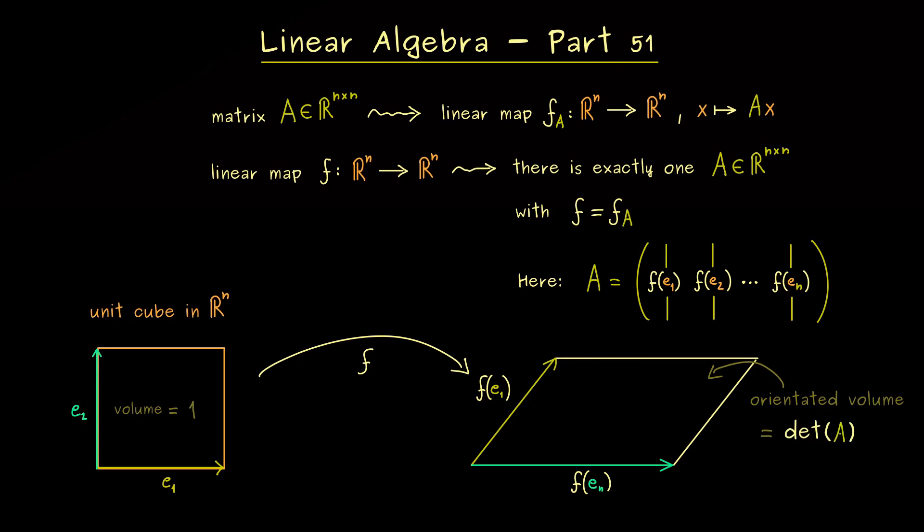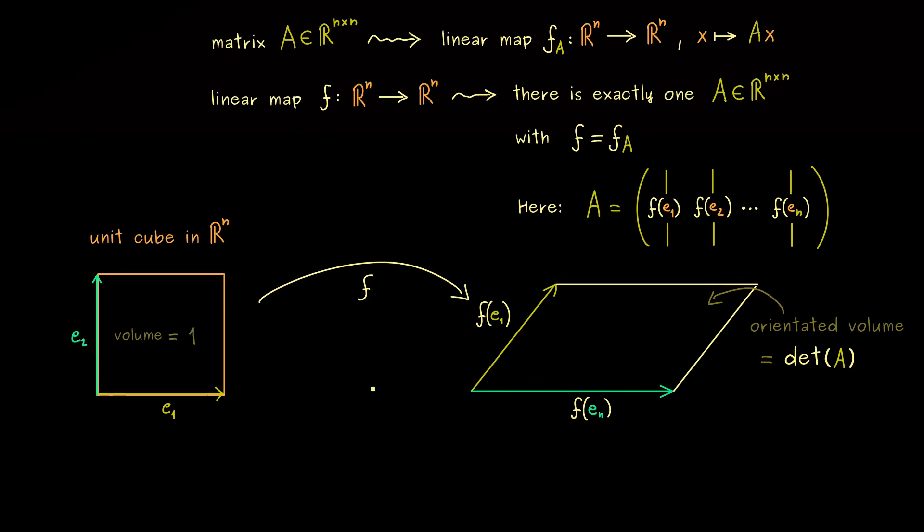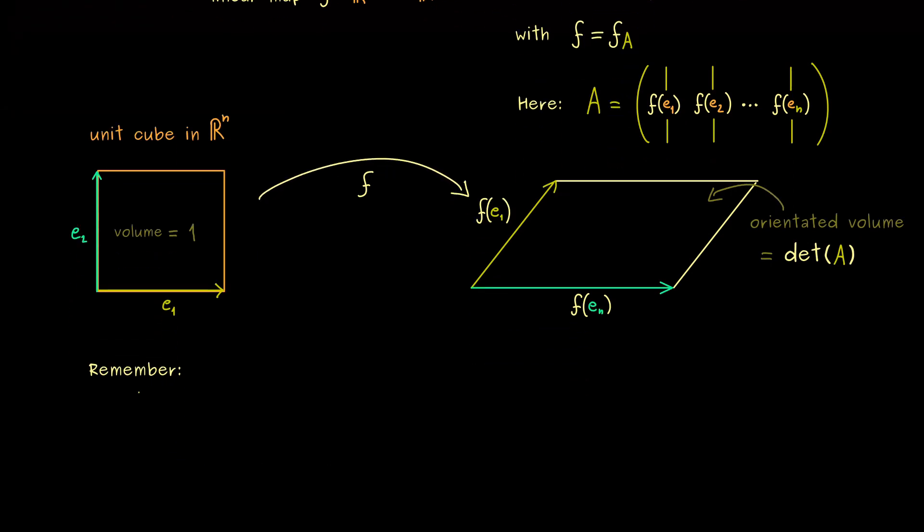Of course, we still talk about the general n-dimensional volume. So in summary, we could say the determinant of A tells us how much the volume of the unit cube is changed by the linear map f. And I would say, this is such an important fact, that we can immediately write that down. So in one sentence we say, determinant of A gives the relative change of volume caused by the linear map f_A. Of course, for the moment we only have that for the unit cube, but we can generalize that soon.